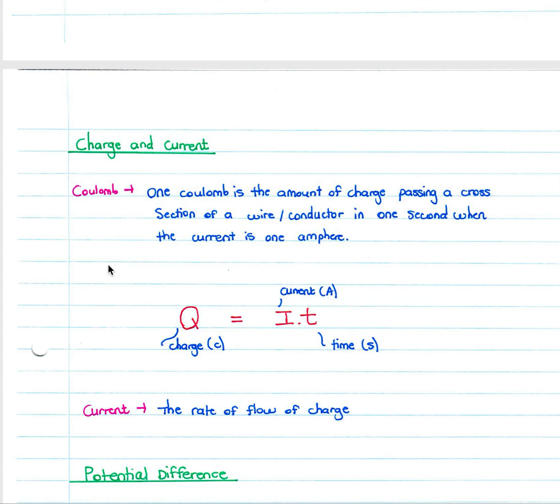The formula is Q equals I times t, where Q is charge measured in coulombs, I is current measured in amperes, and t is time measured in seconds. Always convert to coulombs, amperes, and seconds before doing calculations. They may give values in nano, pico, or millicoulombs, so you must convert.